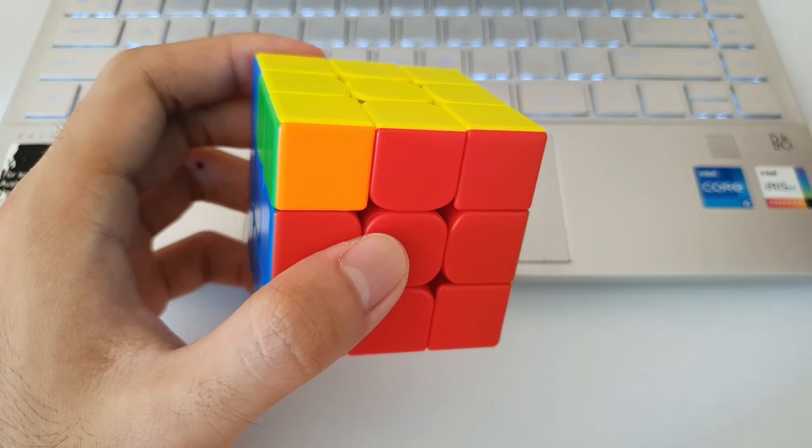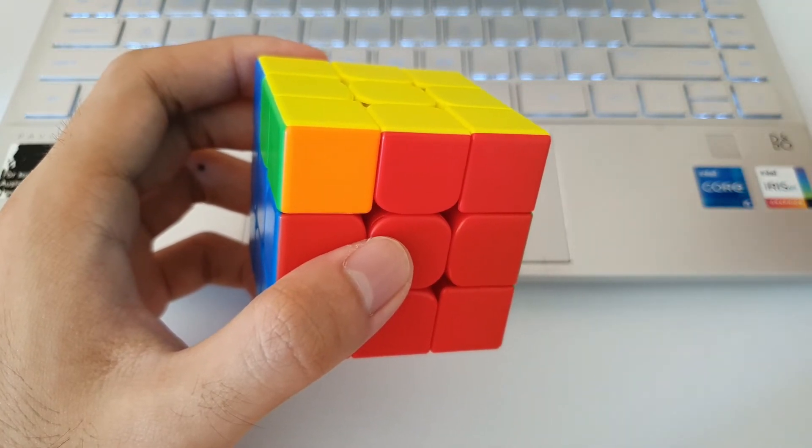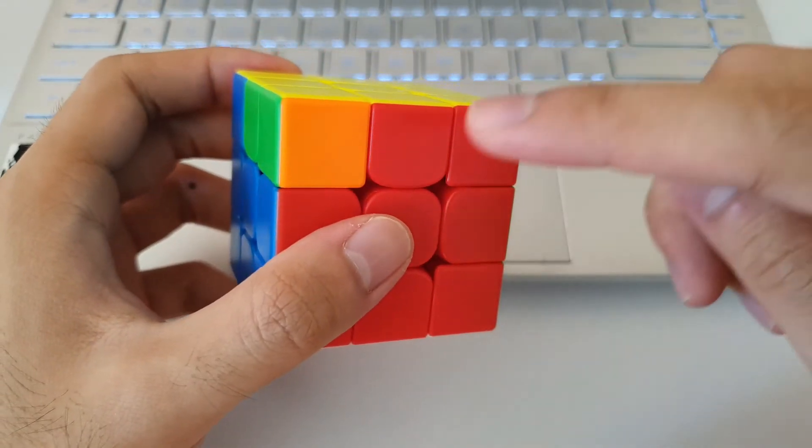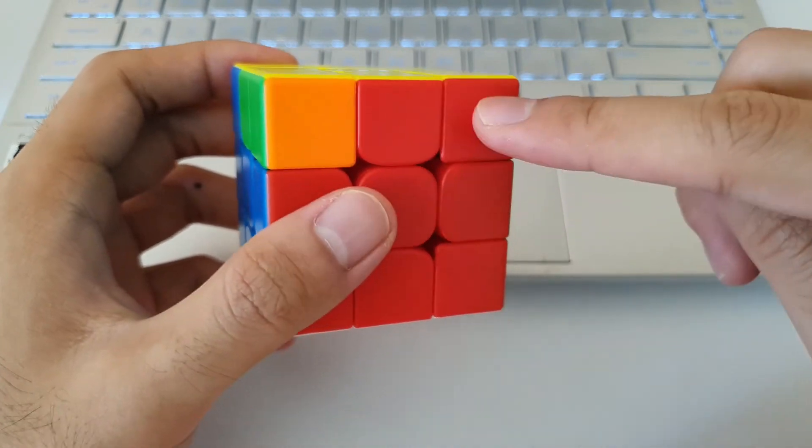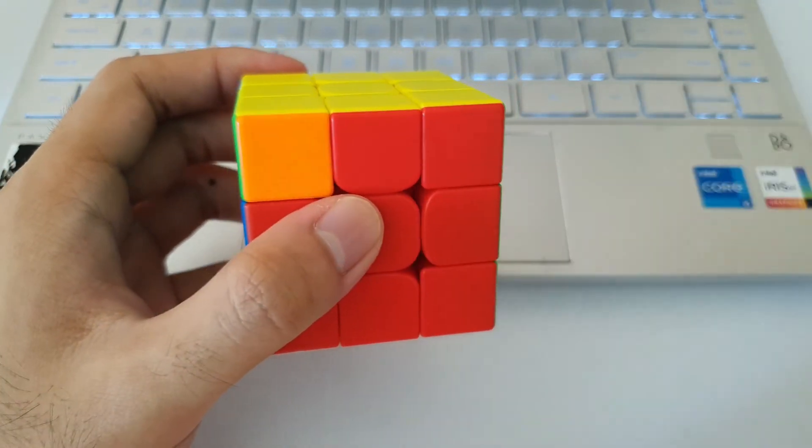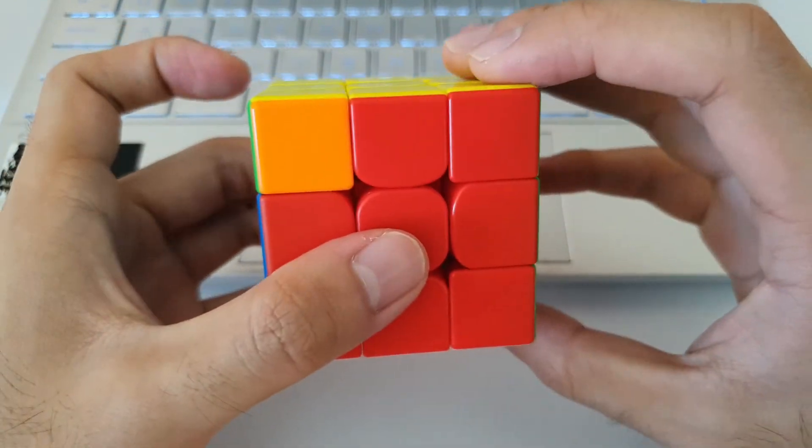So AUF for N-perms are actually quite easy to recognize. They are pretty much recognized by the front 2x1 bar here. So if this is matching the rest of the side, then you won't need to do an AUF after the algorithm.